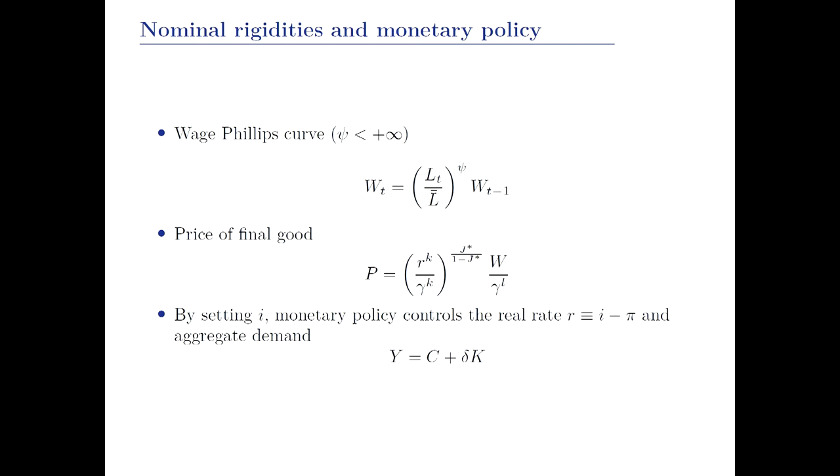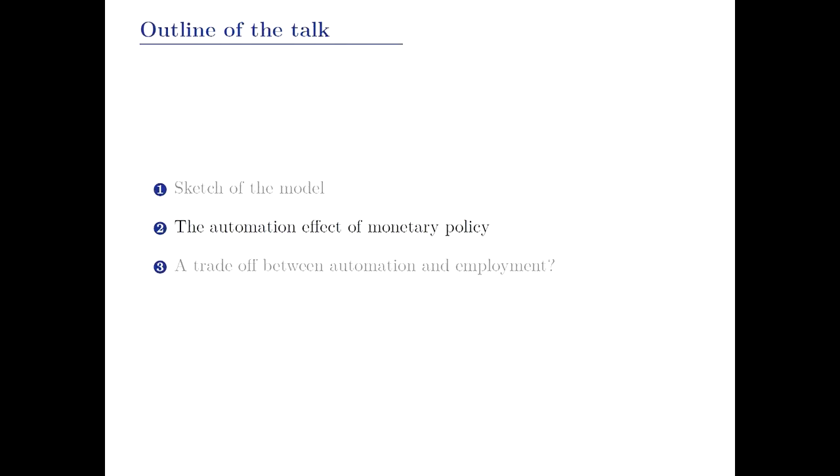For nominal rigidities, we assume a wage Phillips curve so that nominal wage inflation is positively related to the deviation of employment from its natural level. Prices inherit part of the wage stickiness, meaning that by controlling the nominal interest rate, the central bank can effectively control the real interest rate. From now on I'll frame monetary policy directly in terms of a path for the real interest rate. Changes in the real interest rate affect aggregate demand — the sum of consumption and investment. When the central bank lowers the interest rate, households want to consume more, firms invest more, and there is higher output.